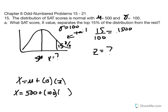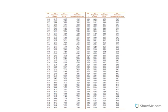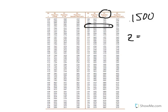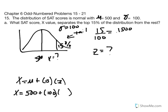Let's utilize our unit normal table. We enter the table using column C, which is the tail, and look for the closest proportion to 0.1500. The closest value we find corresponds to a Z score of 1.04. So Z is equal to 1.04. Let's take that back to our sketch and equation — given our unit normal table, we've identified that Z equals 1.04.